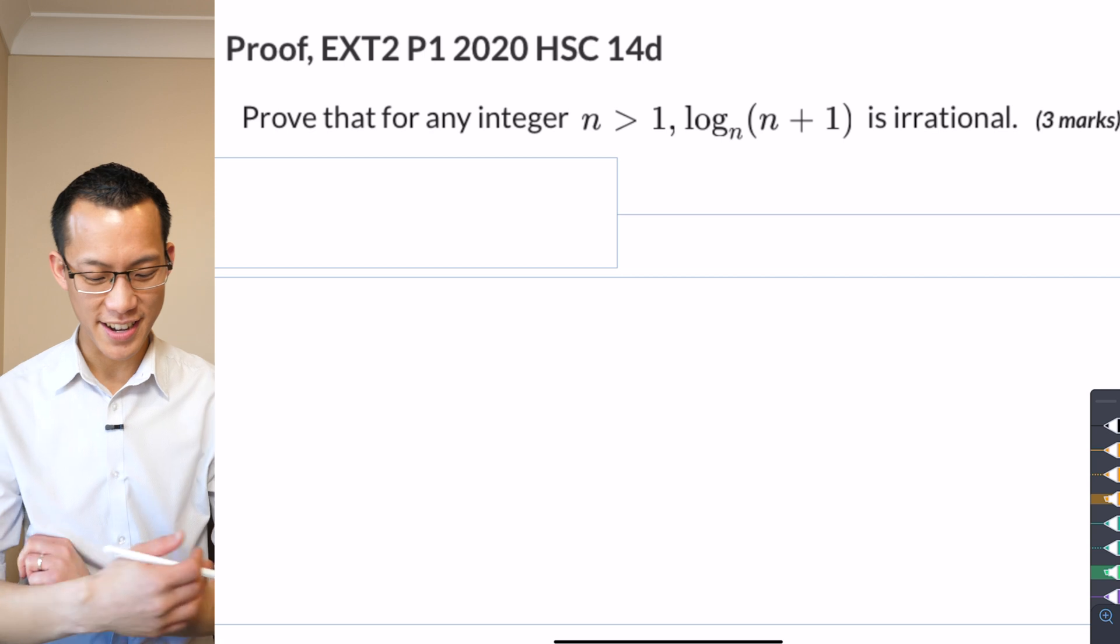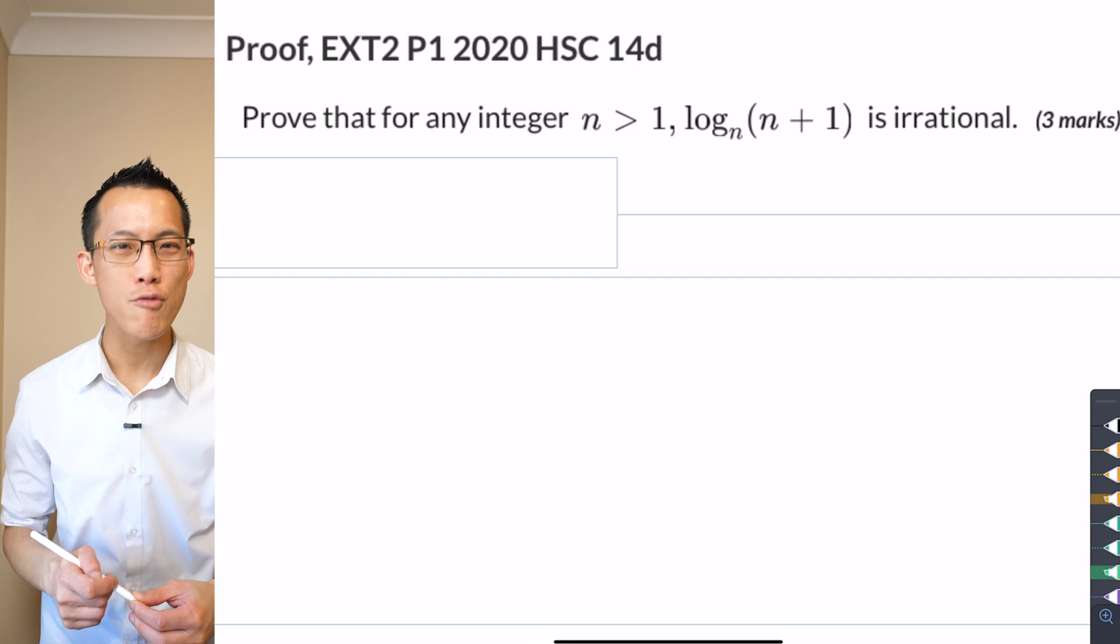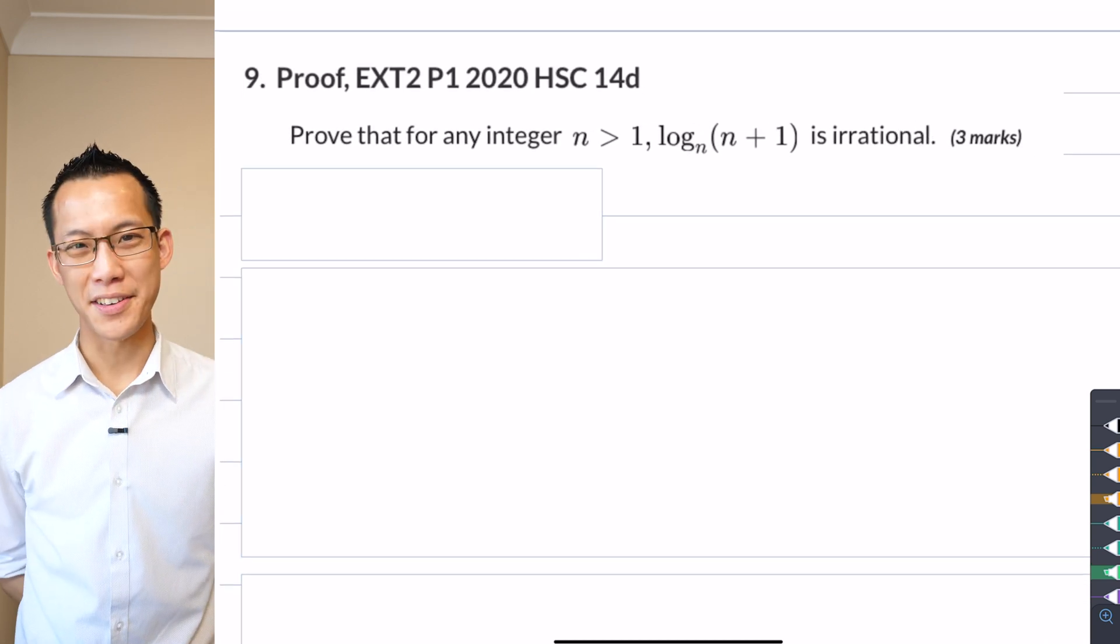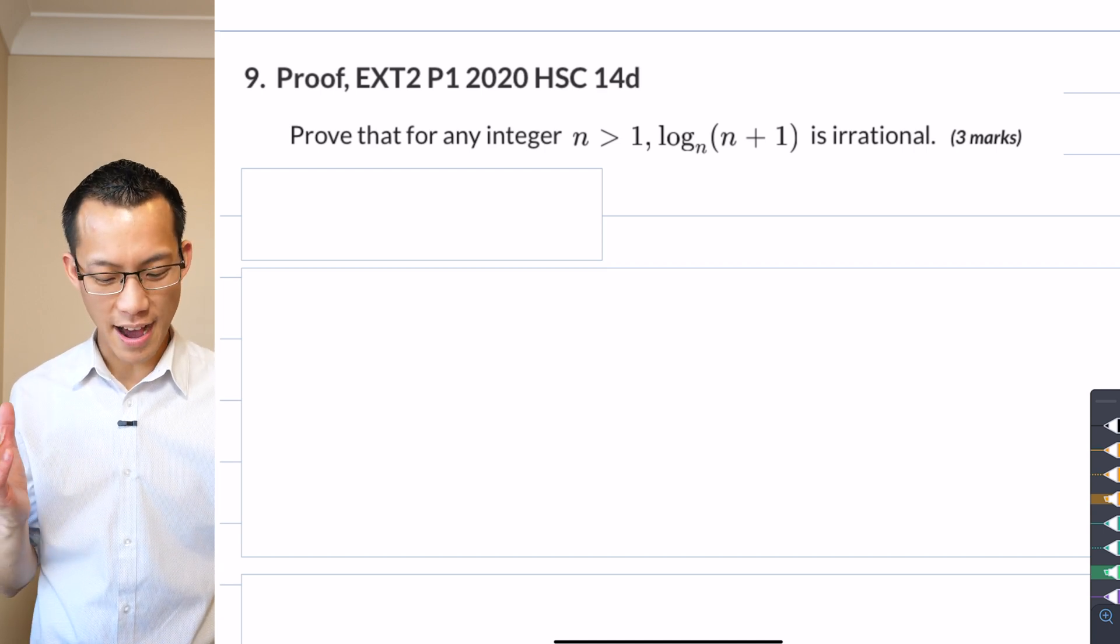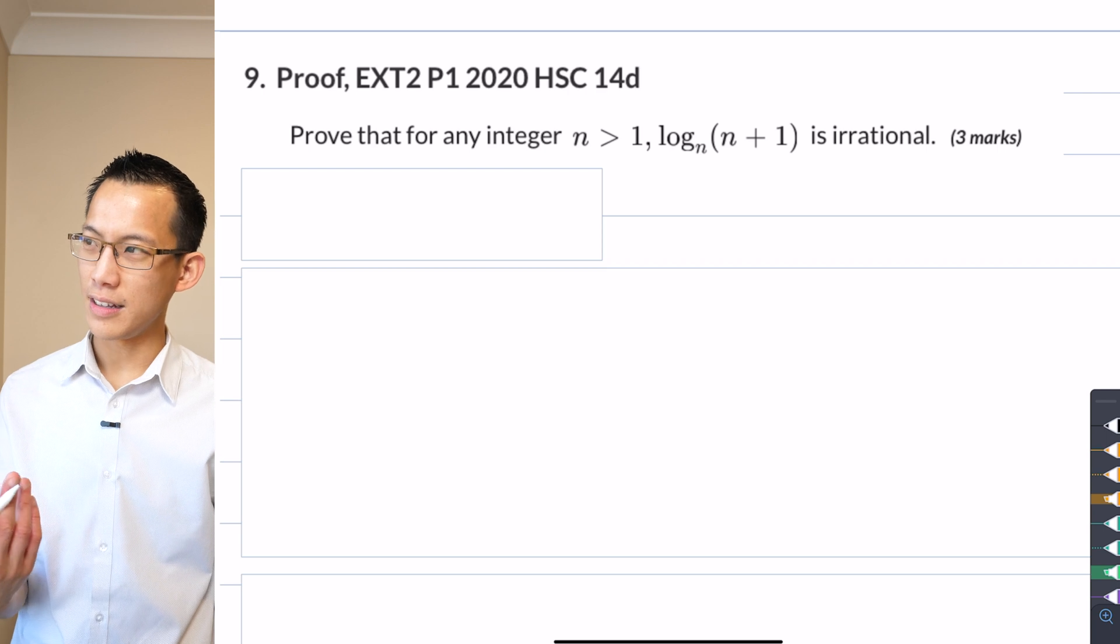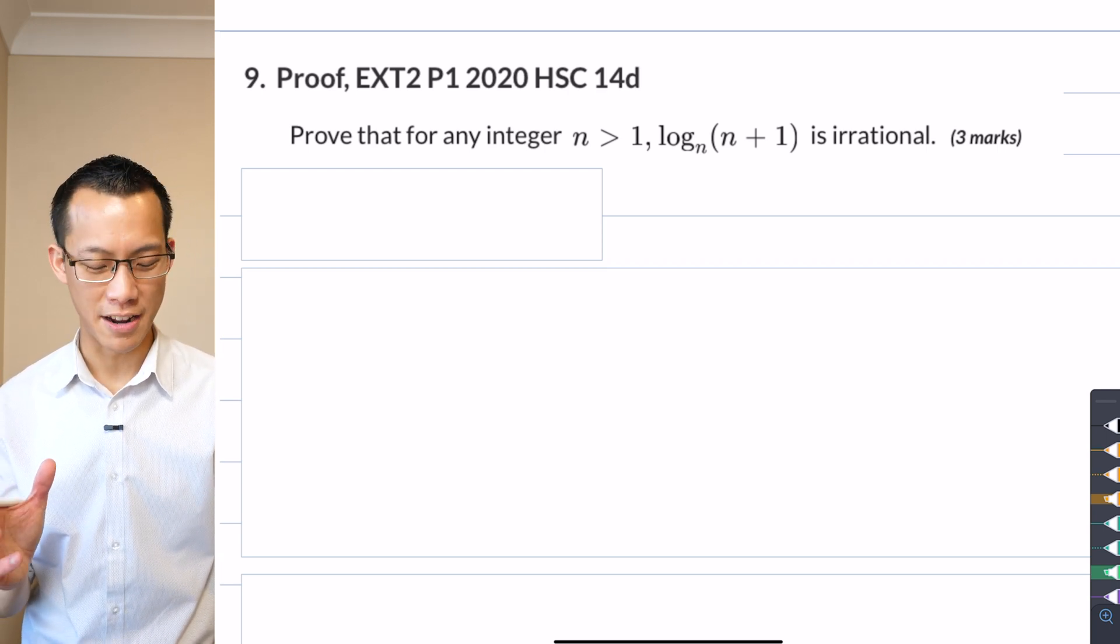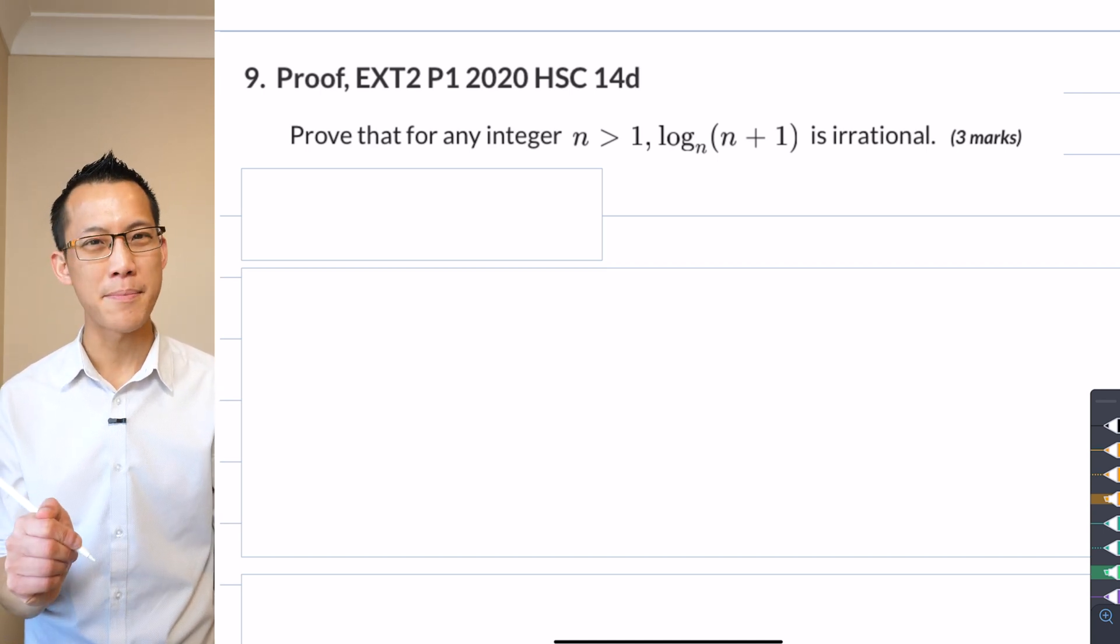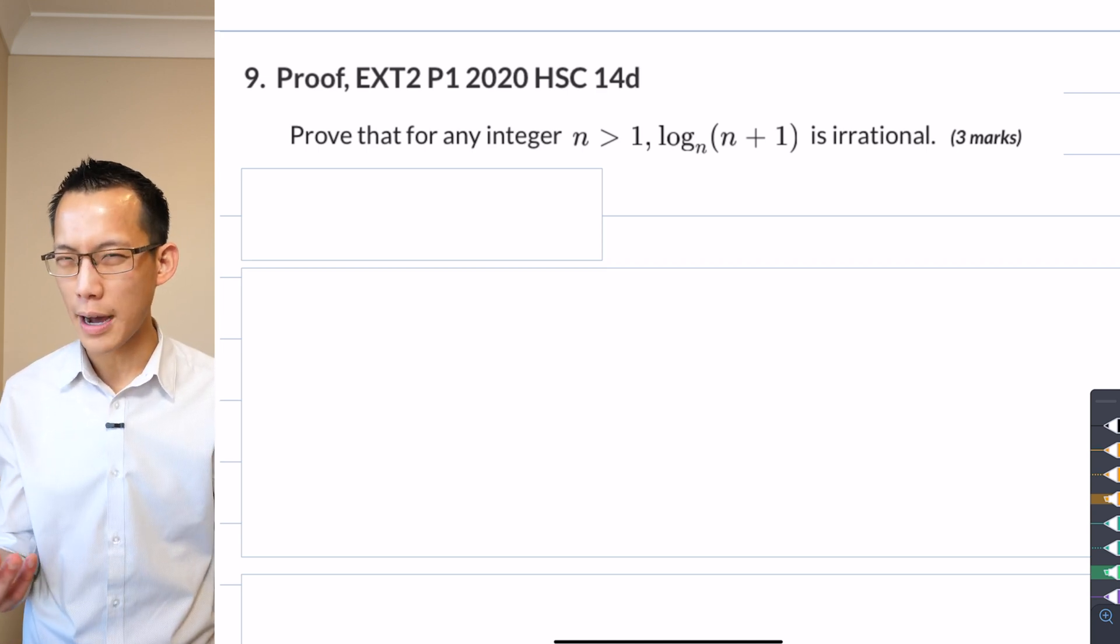Prove that for any integer n is greater than one, the log base n of (n+1) is irrational and they're going to throw three marks at us for this apparently and it's just from last year's HSC. Now, the first thing you've got to decide is, unlike the previous question where it's like, oh, it's an inequality, there's algebra, I'm just going to throw some algebraic manipulation at it, right? In this case, you've got to be a little more thoughtful before you can even put pen to paper.